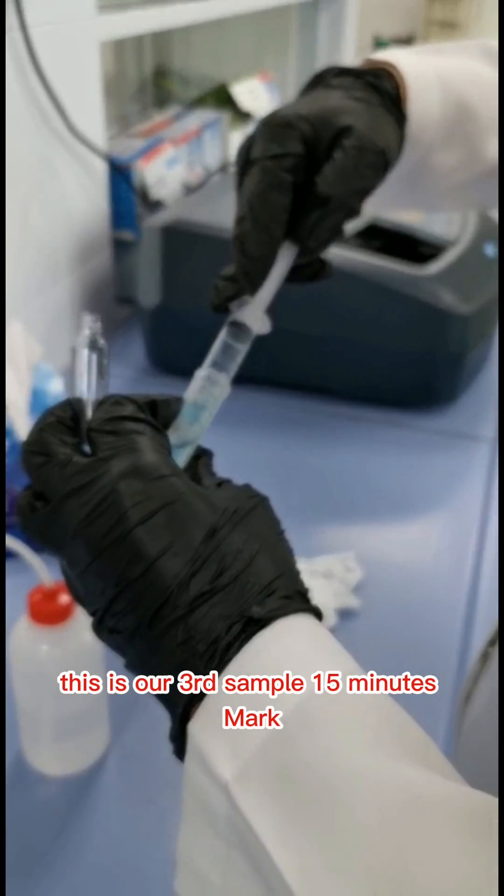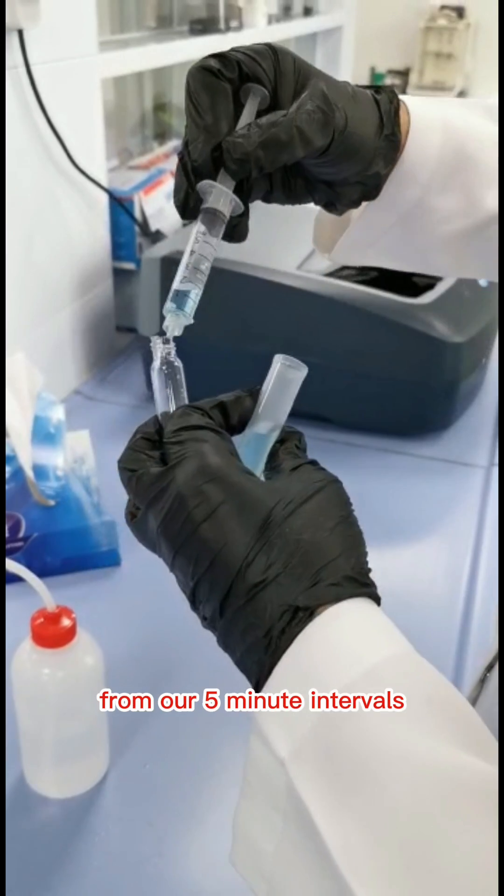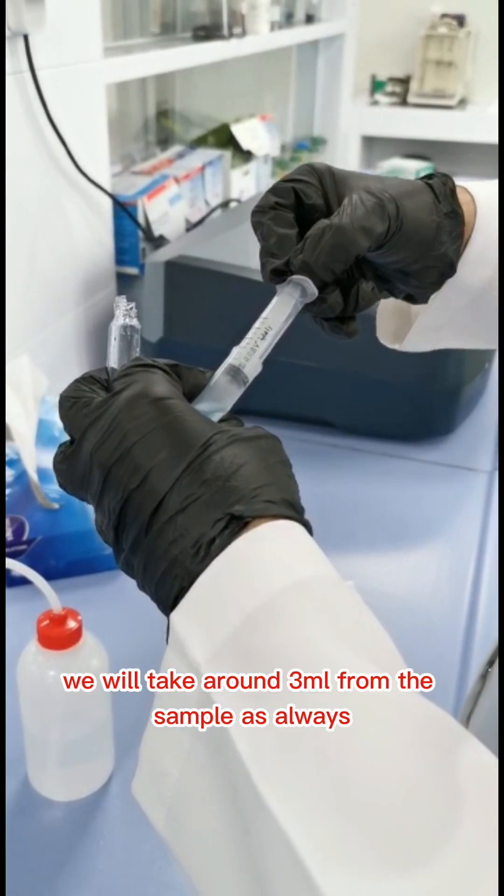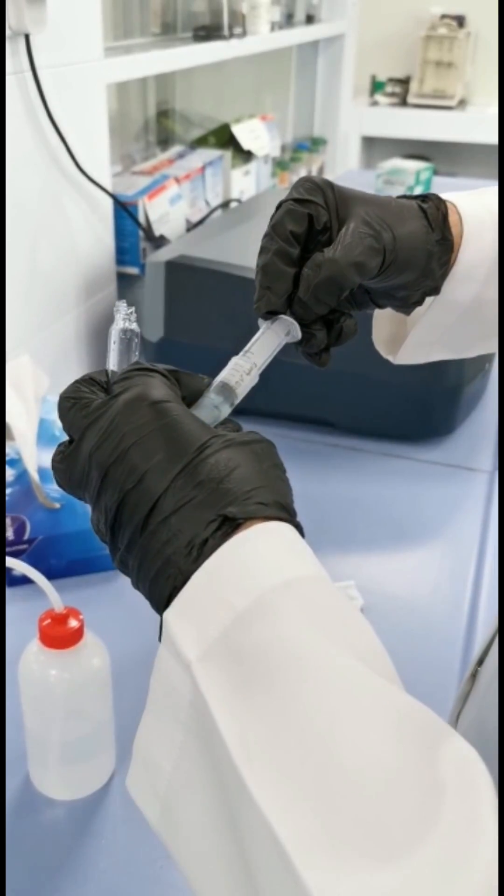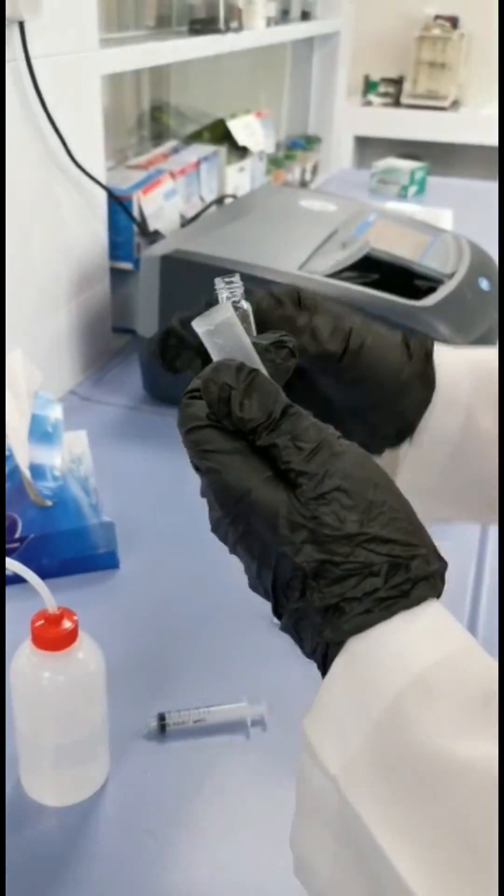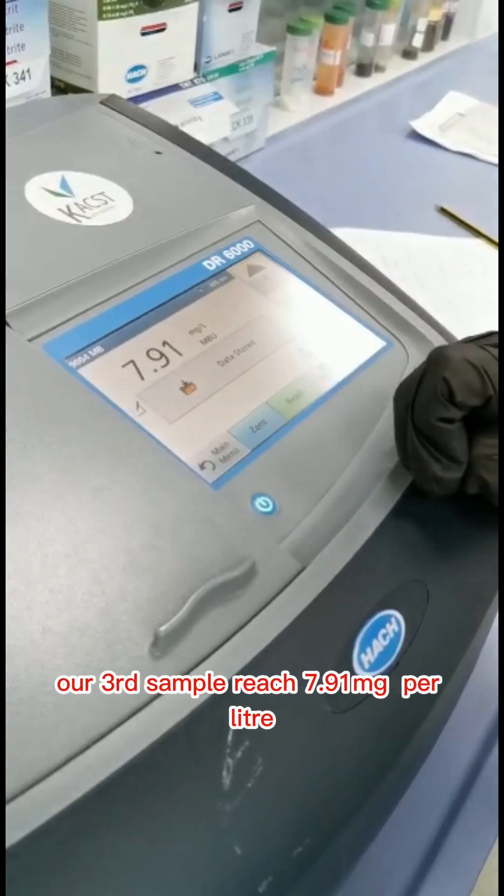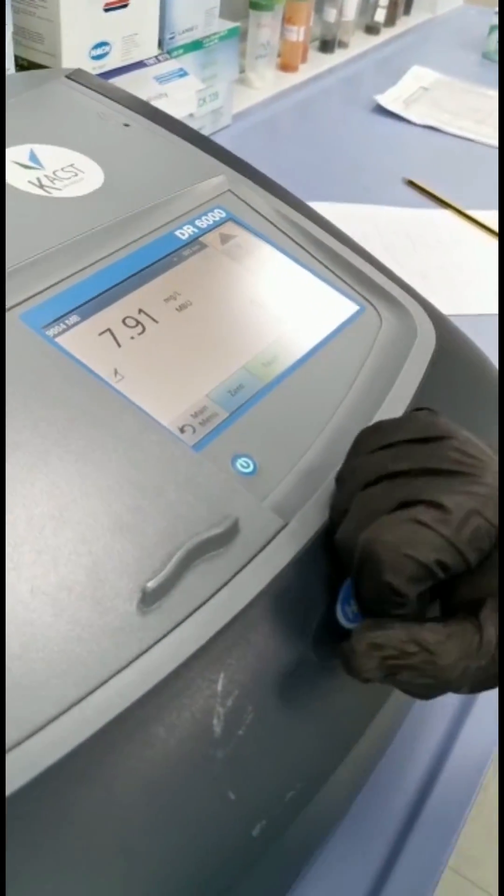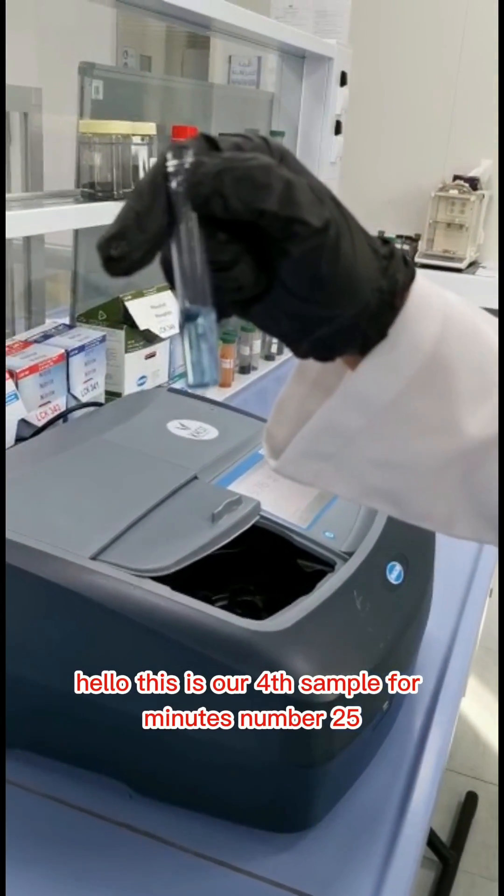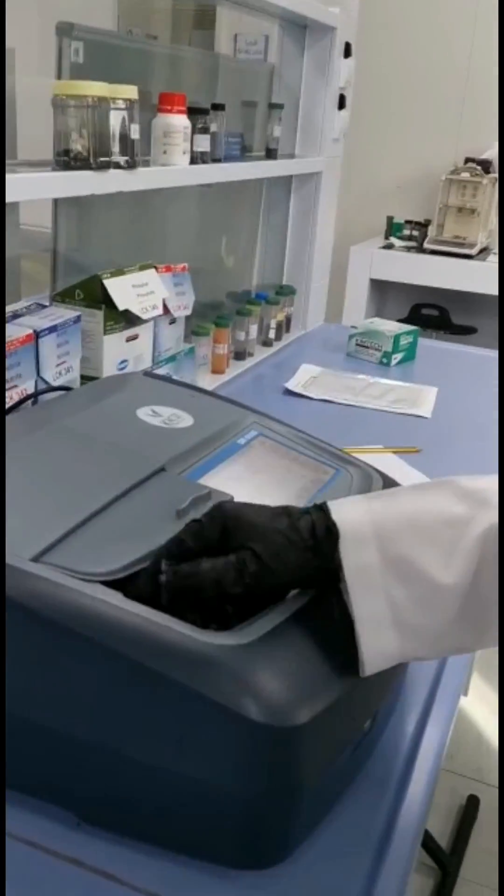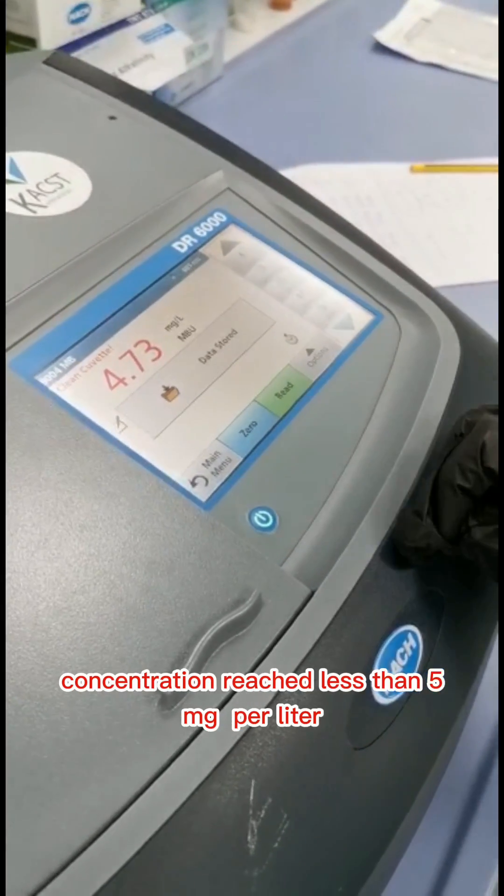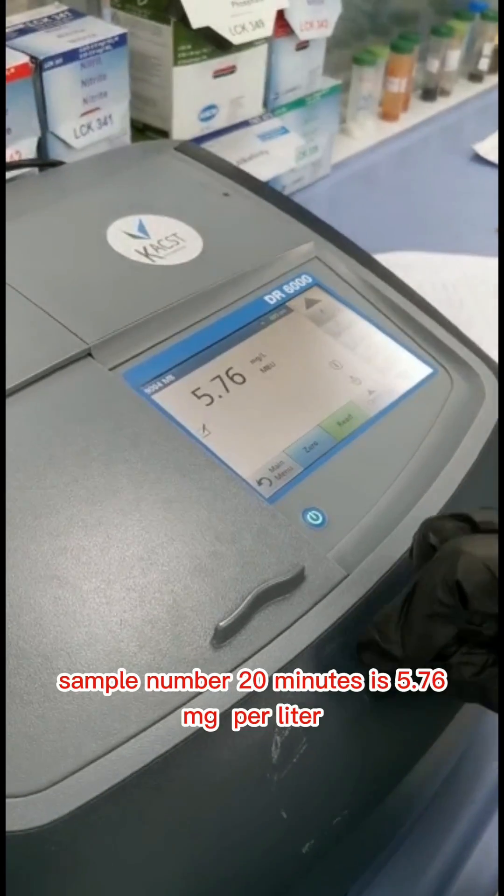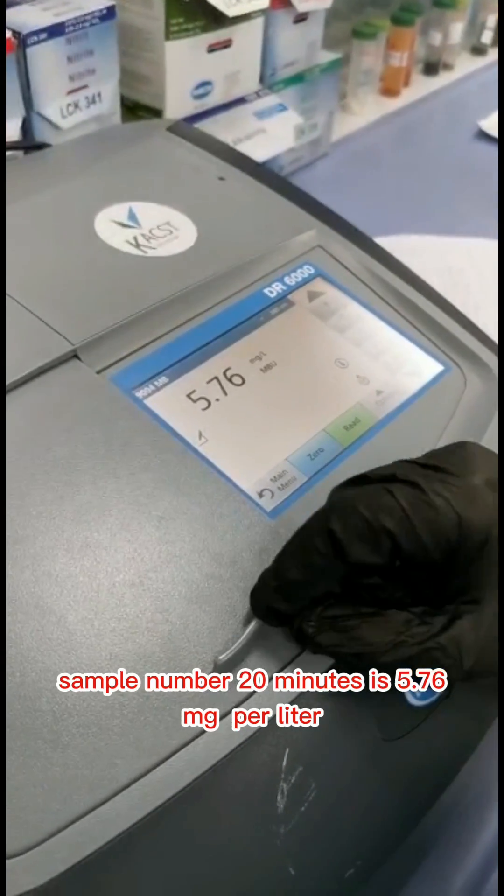This is the third sample, 15 minutes mark from our 5 minute intervals. We will take around 3 ml from the sample. Our third sample reached 7.91 mg per liter. This is our fourth sample for minute number 25. Concentration reached less than 5 mg per liter. Sample number 20 minutes is 5.76 mg per liter.